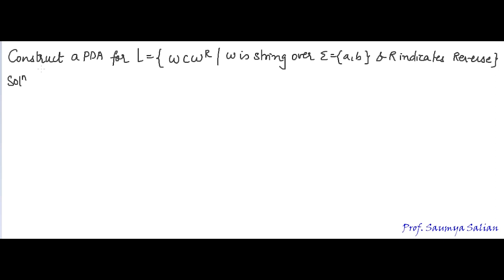Given a question: construct a PDA for the language WCW^R, where W is a string over alphabet set {A, B} and R indicates reverse. W can be any combination of A's and B's.